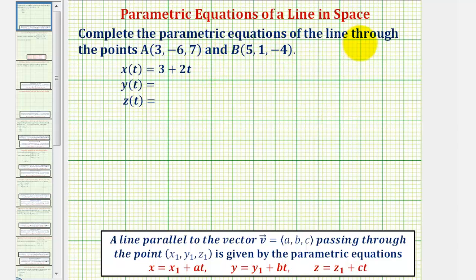We want to find the parametric equations of the line passing through points A and B. Notice how points A and B are points in space.